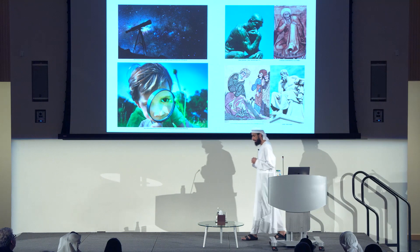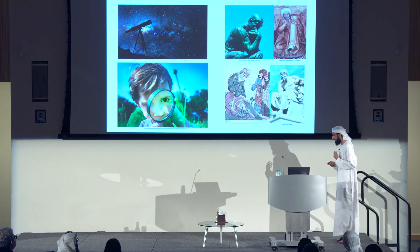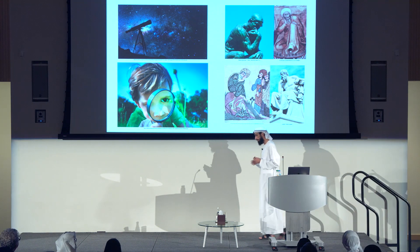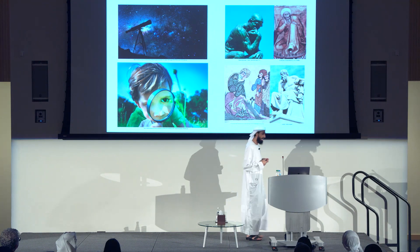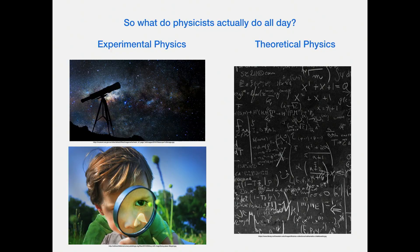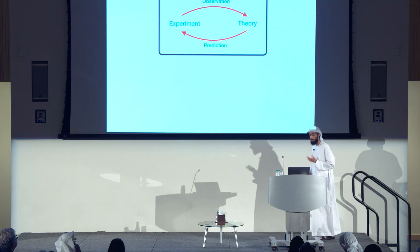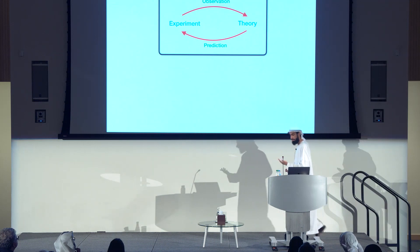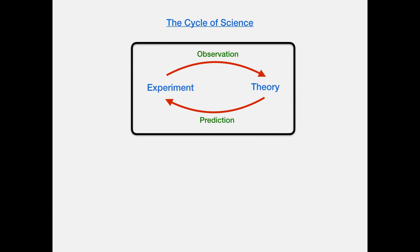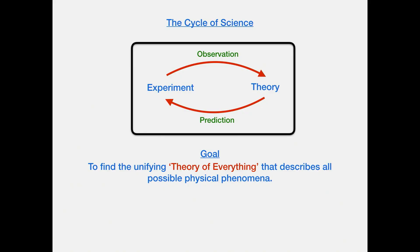We take observations done by experimental physicists and try to make sense of them. Physicists found out a few hundred years ago that the universe has a language, and the language of the universe is not English or Arabic — it's mathematics. The task of a theoretical physicist is to find mathematical theories or models that describe the observations from the experimentalists. The cycle of science is a back and forth between experiment and theory. The goal, at least for a theoretical physicist, is to find the unifying theory of everything that describes all possible physical phenomena.